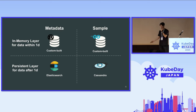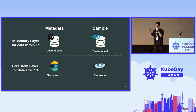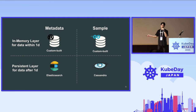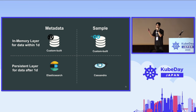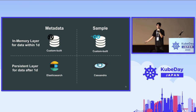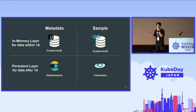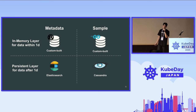As mentioned, there are two types of databases: metadata-specific and sample-specific. Each database has two layers — an in-memory layer and a persistent layer. The in-memory layer is for data within 24 hours — a hot data cache. The persistent layer is for data after 24 hours, using open source products: Elasticsearch for metadata and Cassandra for sample data.